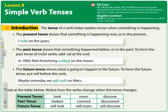The past tense shows that something happened before or in the past. To form the past tense of most verbs, simply add -ed at the end. For example, in 1969, Neil Armstrong walked on the moon. 1969 is several years ago — this already happened, so you don't want to say Neil Armstrong walk on the moon because it already happened before.